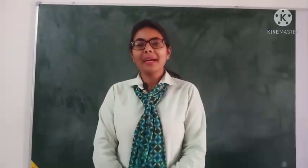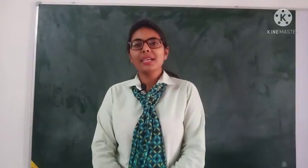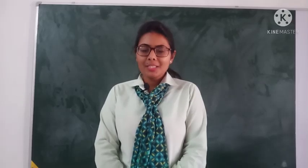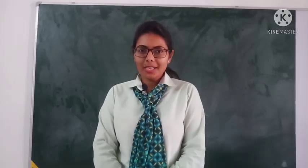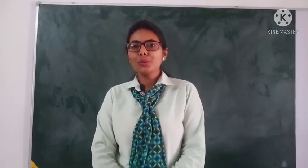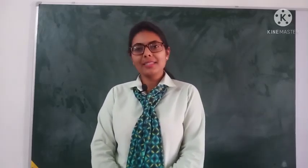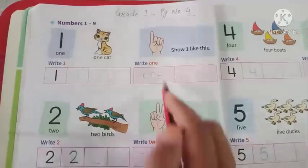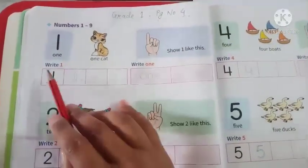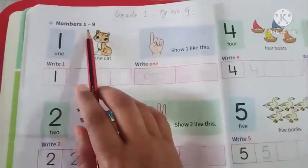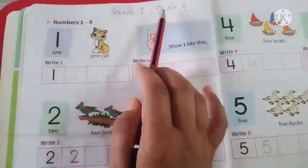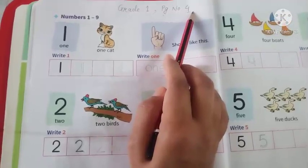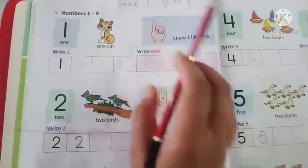Hello students, my name is Pooja and I am going to teach you mathematics. Today we are going to learn numbers 1 to 9. Let's just see them students. Now we are going to learn numbers 1 to 9 on page number 4 of your mathematics book.